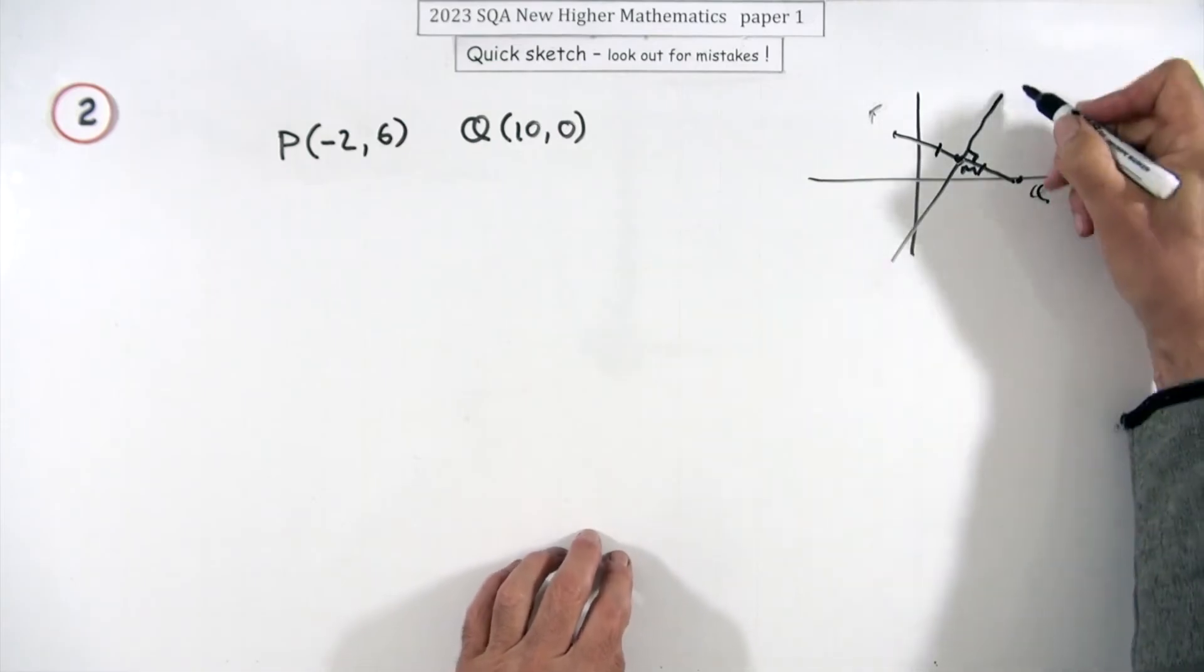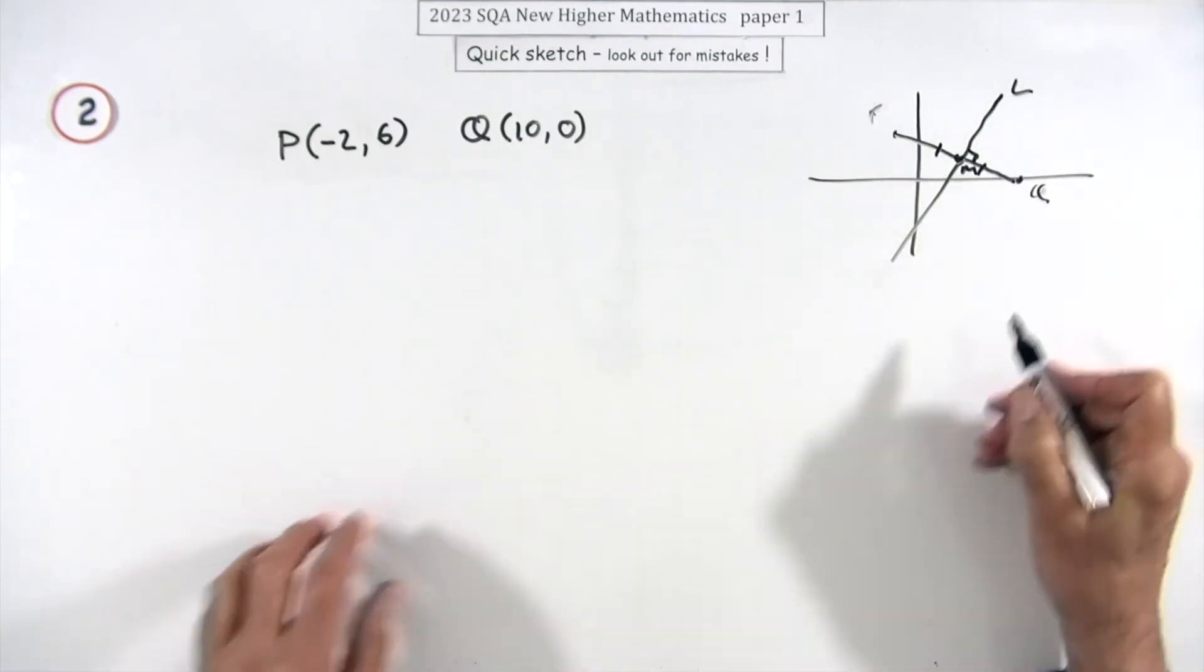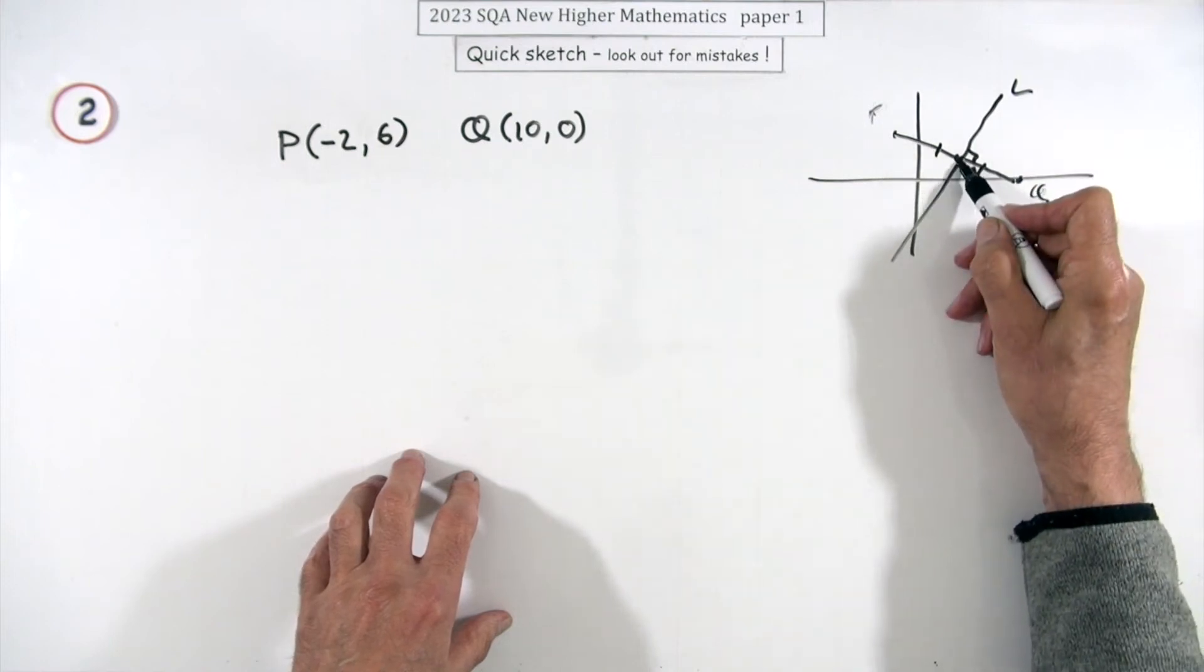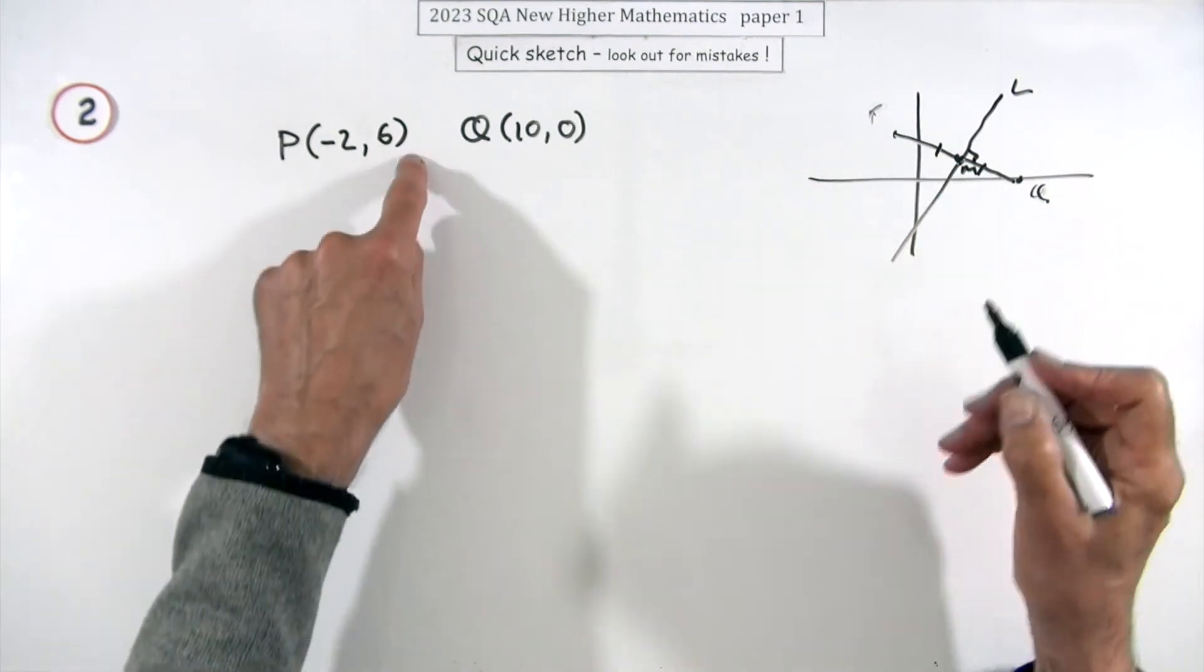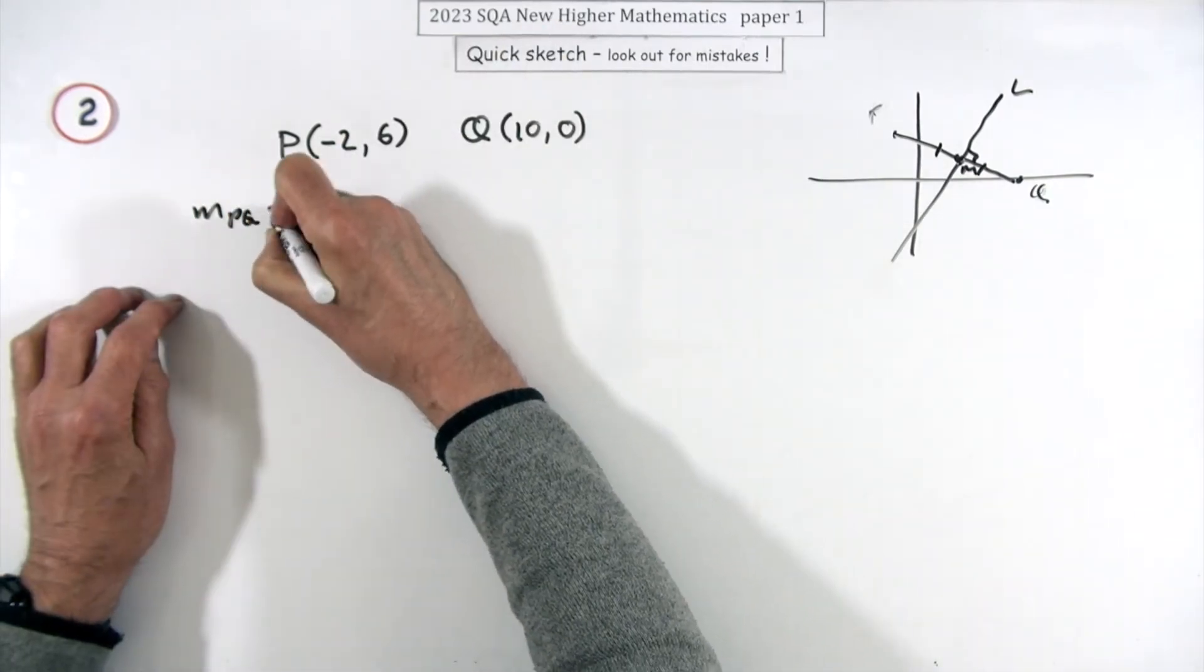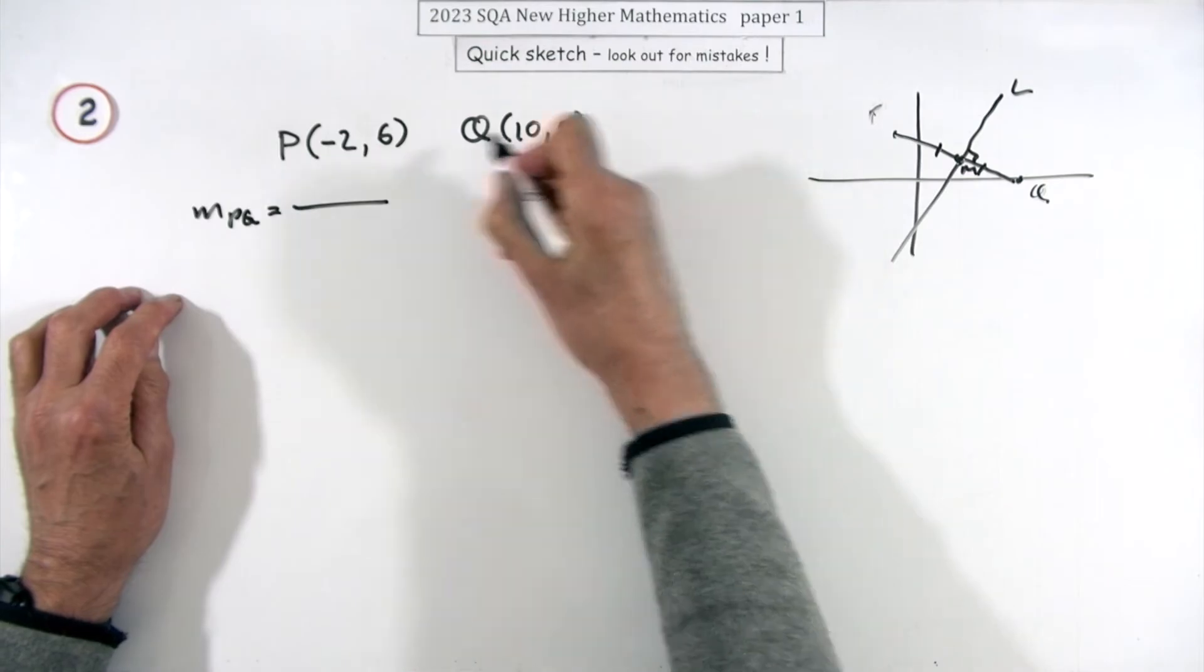And you want the line to go at right angles. So that's the line you're looking for, this line here. Well to get the equation of a line you need two things: you'll need a point on it, that'll be the midpoint, and its gradient. You'll get it by reference to this gradient, so that must be the first mark then. What's the gradient of PQ?